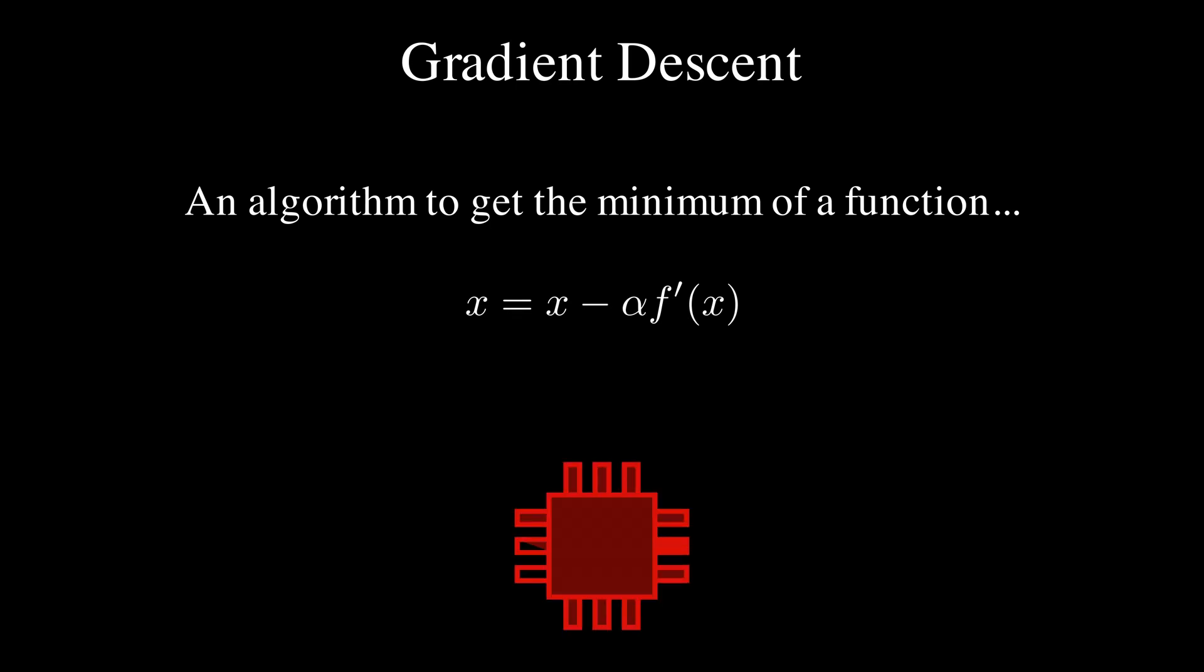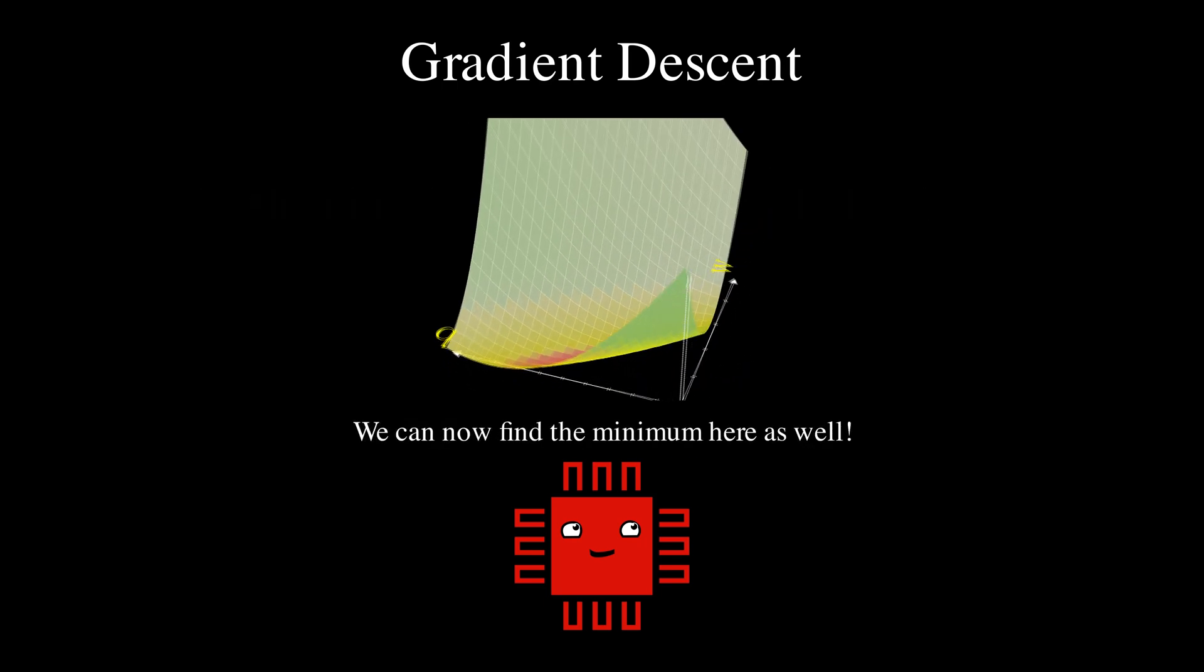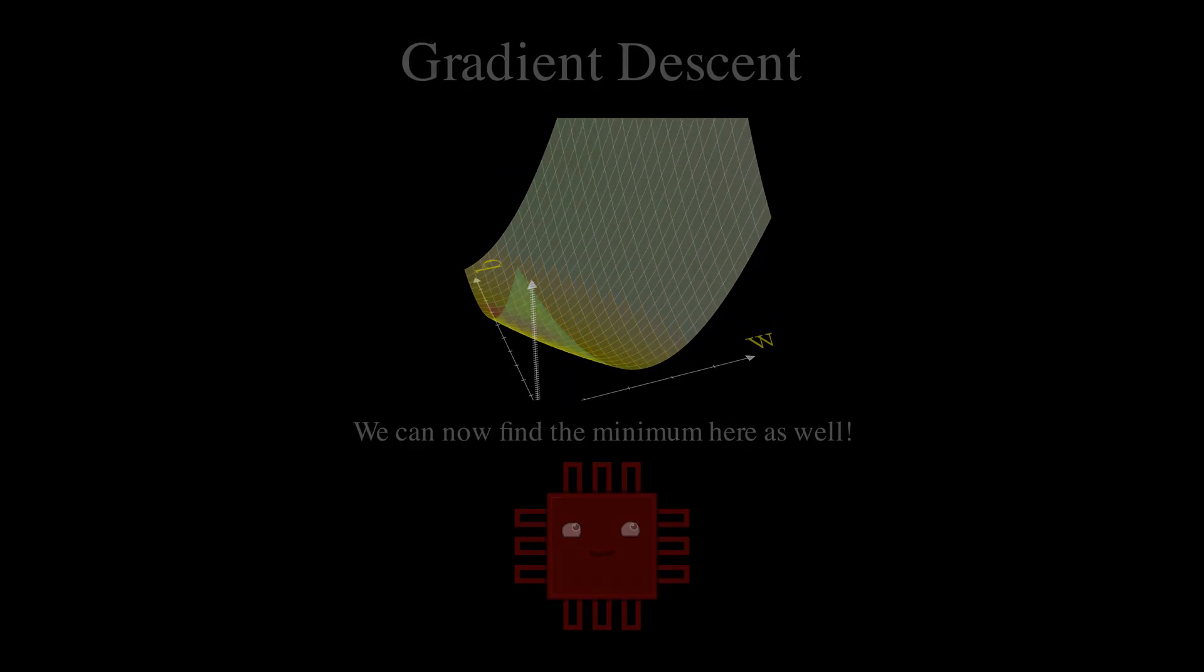This is what gradient descent is. However, there is a minor modification where we scale the derivative by a constant alpha before subtracting it. What we can do now is use this to find the minimum of our bowl-like mean squared error cost function.